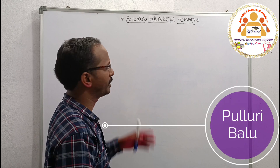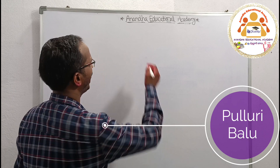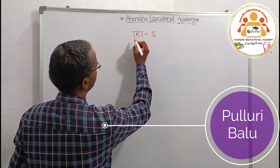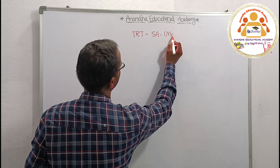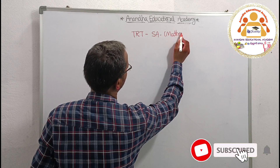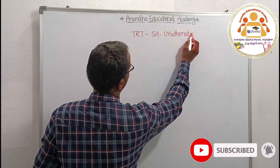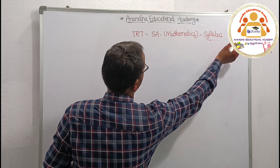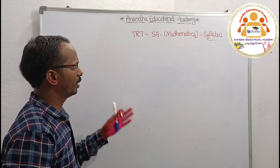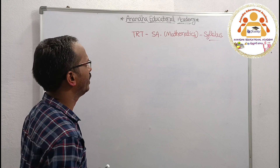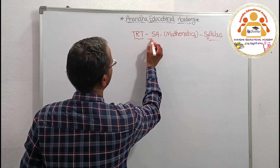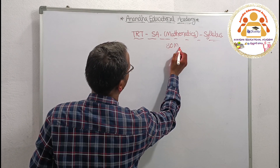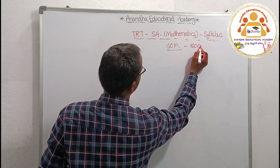Hi friends, welcome to Ananda Education Academy. In this session we have to discuss TRT — Teacher Recruitment Test — School Assistant Mathematics syllabus and also exam pattern. School Assistant Mathematics has an 80 marks question paper with a total of 160 questions.